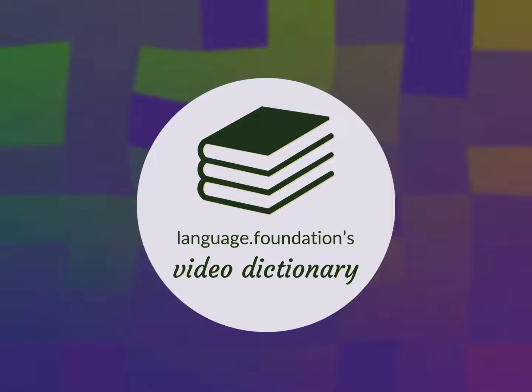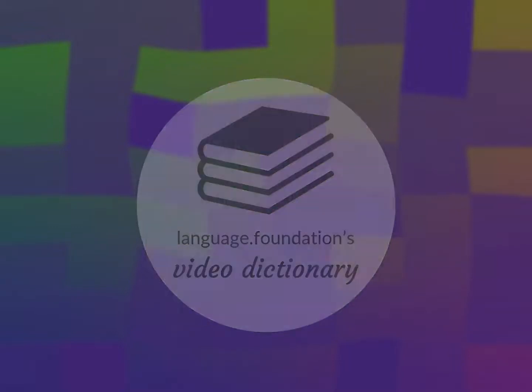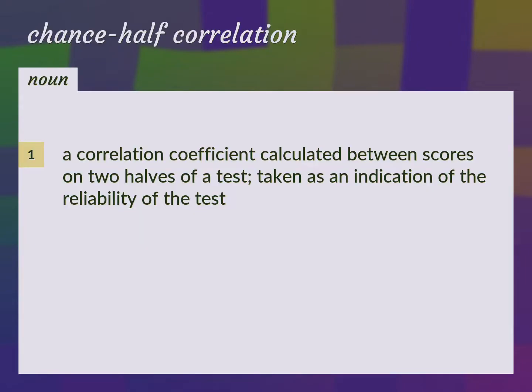Language.Foundation's Video Dictionary, helping you achieve understanding. A correlation coefficient calculated between scores on two halves of a test, taken as an indication of the reliability of the test. Split half correlation.